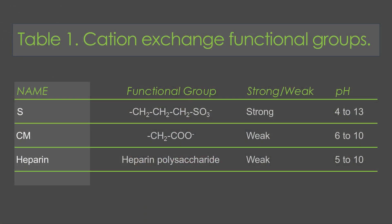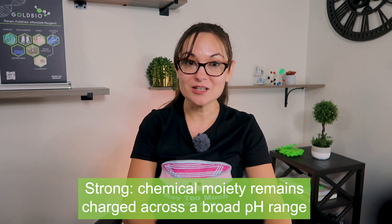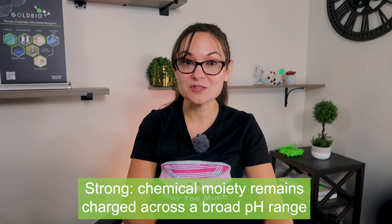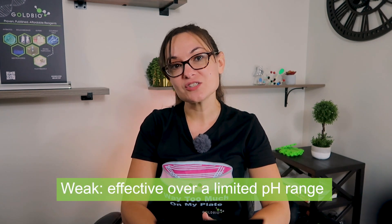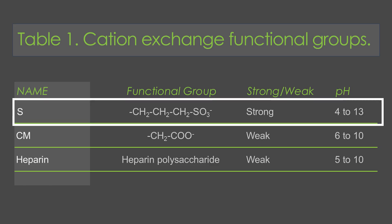There are various cation exchange resins, all designed to bind positively charged molecules using different functional groups. Here's a table listing some of the commonly used cation exchange resins. You'll notice that some resins are labeled as strong or weak exchangers. Strong cation exchangers maintain their charge across a broad pH range, while weak exchangers are effective over a more limited pH range.